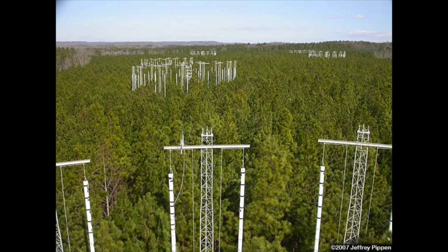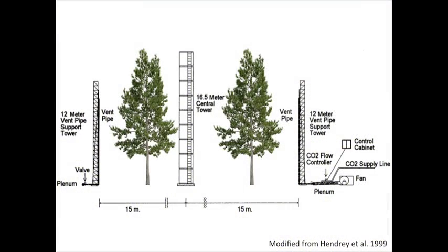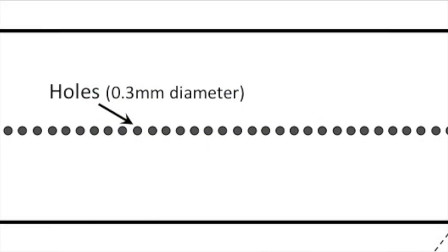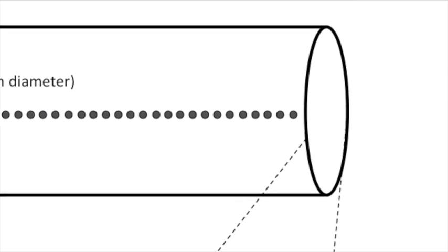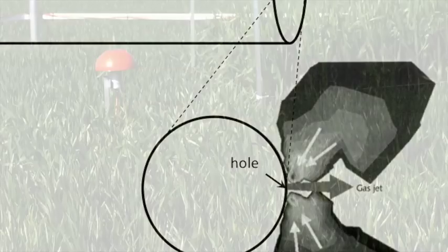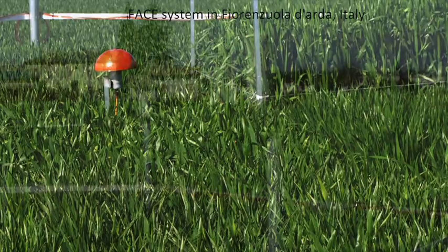Before we go any further, it's important to note the difference in FACE technology between the Duke Forest site and other sites that we will visit today. At the Duke Forest site, carbon dioxide was mixed with air before being blown into the rings. But soon after the development of the Duke FACE site, researchers developed a new, more efficient FACE technology. Instead of mixing carbon dioxide with air and blowing it into the rings, pure carbon dioxide can be pumped in through microscopic holes, which cause carbon dioxide to be ejected at supersonic speed. This method maximizes the mixing of carbon dioxide with ambient air without the use of blowers, improves the efficiency of carbon dioxide delivery, and greatly reduces the amount of experimental infrastructure needed. The majority of FACE sites developed after the early 2000s used this technology.